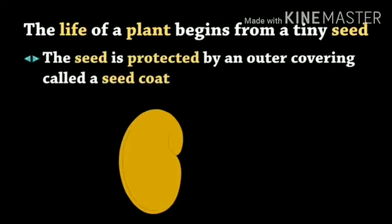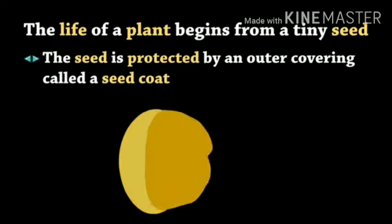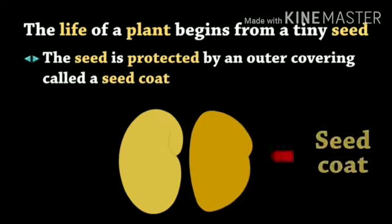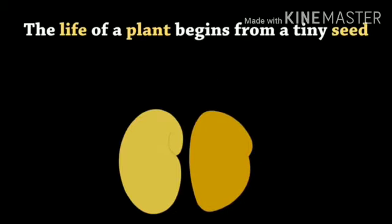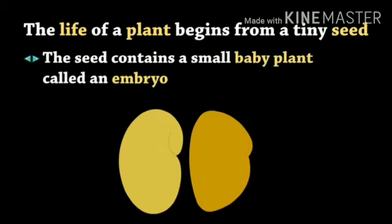The seed is protected by an outer covering called a seed coat. The seed contains a small baby plant called an embryo.